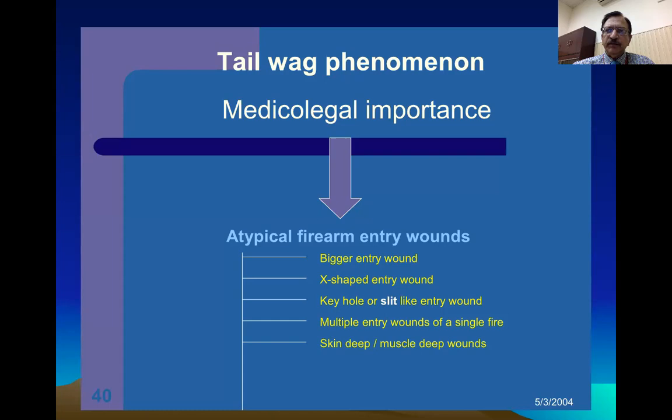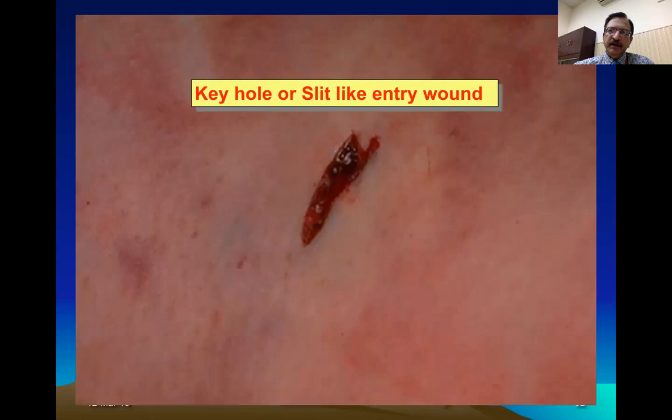Terminally, if the velocity has been reduced so low, the bullet only lodges skin-deep or muscle-deep, lacking sufficient energy to create a large cavity, fracture, or travel through the body. These are various atypical wounds that are medically important when terminal tail wag is present. A lateral impact produces a keyhole-type entry wound when the bullet strikes at reduced velocity and laterally.